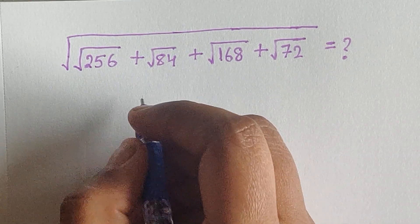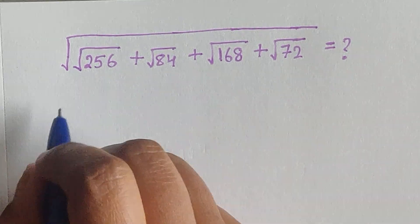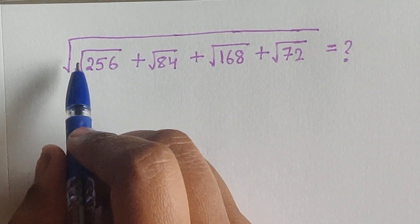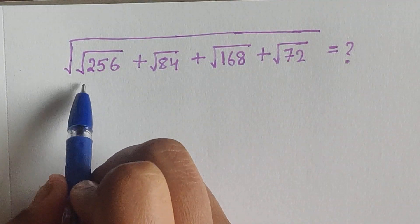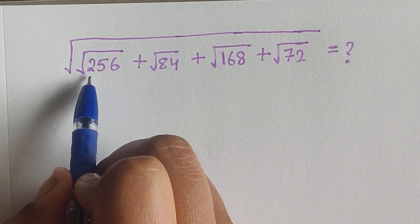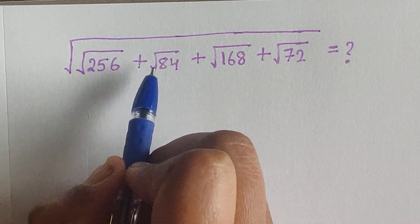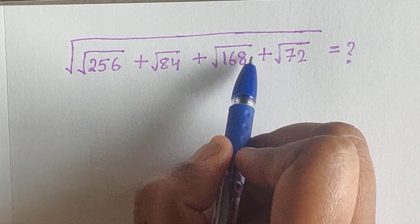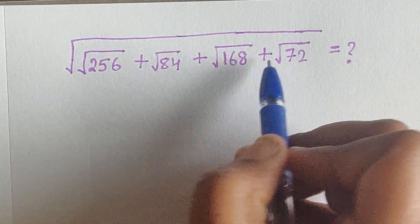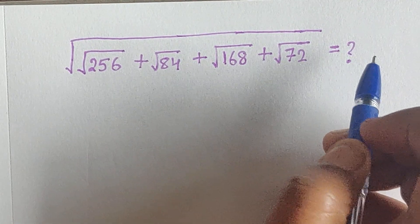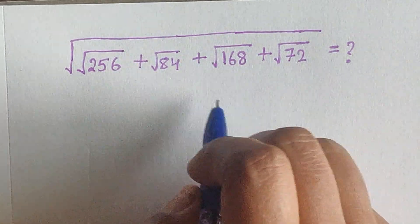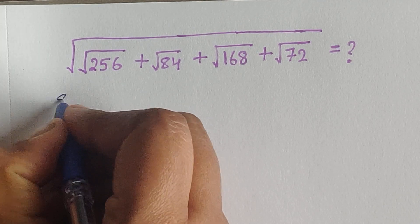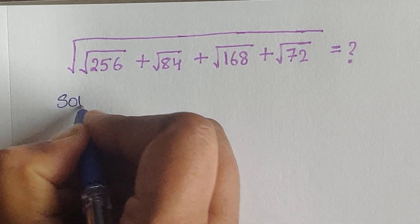Hello everyone, welcome back to our channel. Here we have one problem: square root of 256 plus square root of 84 plus square root of 168 plus square root of 72. Let's see the solution.